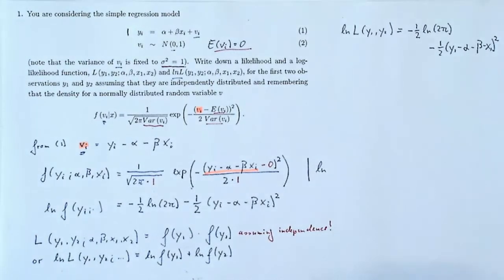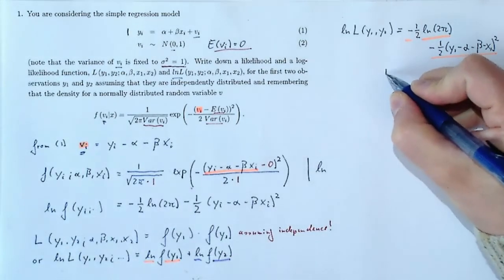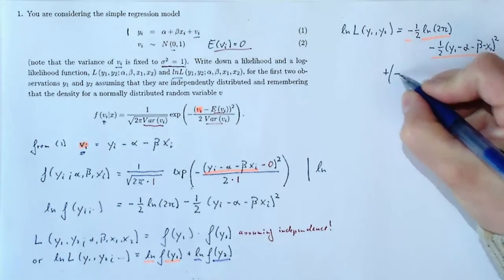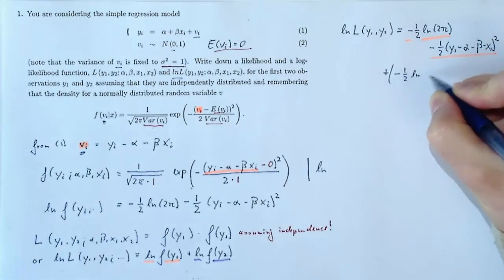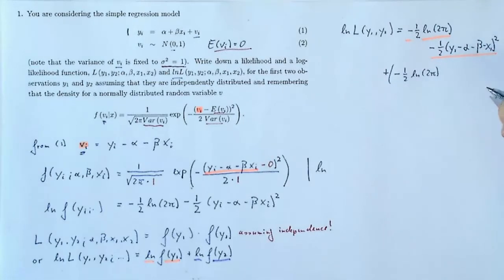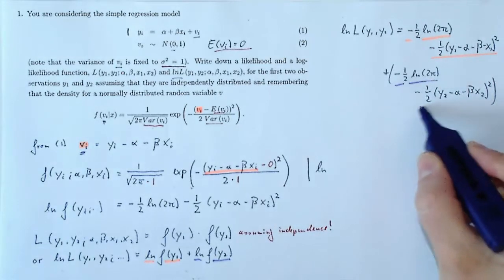What we've written down is the first part, ln f of y1. Now we need to add ln f of y2, the log density for the second observation. So plus, and then we'll put everything in big parentheses: negative 1 half log 2 pi minus 1 half y2 minus alpha minus beta times x2 squared. That was the second term.